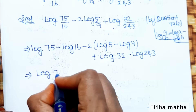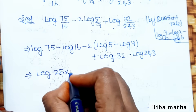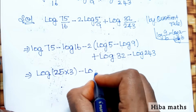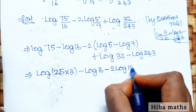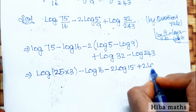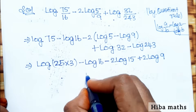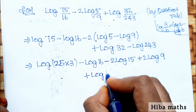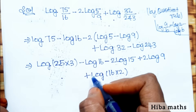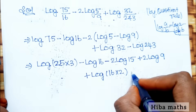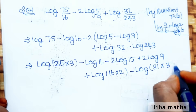The second step is to simplify. We split: 75 = 25 × 3, 16 stays, minus 2·log 5 plus 2·log 9. Then 32 = 16 × 2, and 243 = 81 × 3. We split these to allow cancellation.